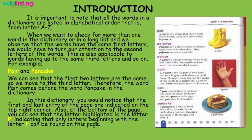In this particular dictionary on our screen, you will notice that the first and the last entry of the page are indicated on the top right corner. These are known as the guide words. The guide words help you to know the particular set of words that can be found on a page. Also, at the bottom of the page you can see that the letter highlighted is letter P, indicating that only words beginning with letter P can be found on this page.